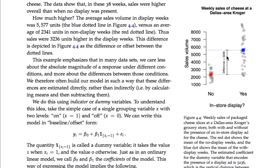Let's learn the nuts and bolts of how dummy variables work. We've got two categories for our grouping variable: no and yes. We arbitrarily label these with numbers. Variable x_i tells you, for a given week — where i indexes the weeks — whether we're in category zero (no display) or category one (yes, display). We start counting at zero rather than one, and we'll see why in a moment.